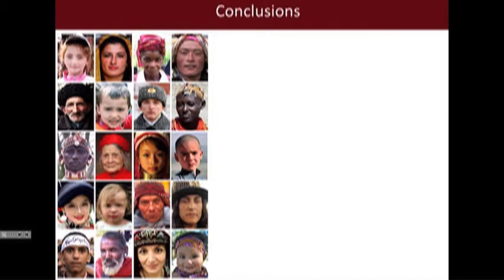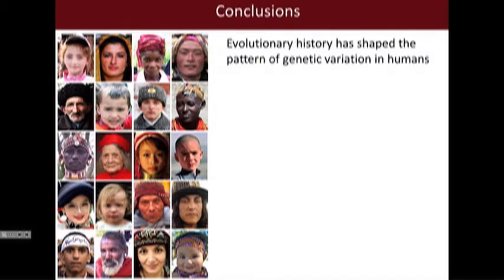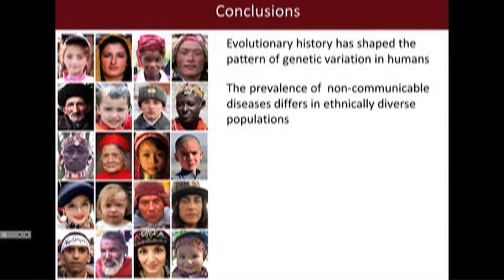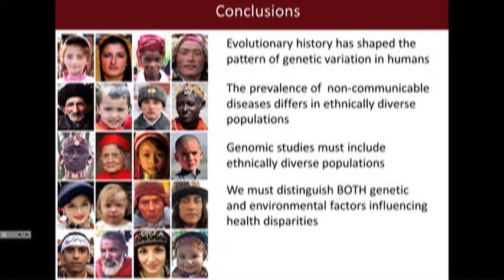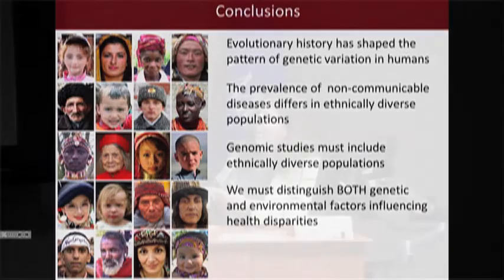In conclusion, our evolutionary history has shaped the pattern of genetic variation we see today. The prevalence of noncommunicable diseases differs across ethnically diverse populations. It is absolutely critical that genomic studies include ethnically diverse populations, and we must distinguish both genetic and environmental factors that are influencing health disparities, as they interact together. Ultimately, we want to develop better personalized medicine approaches.